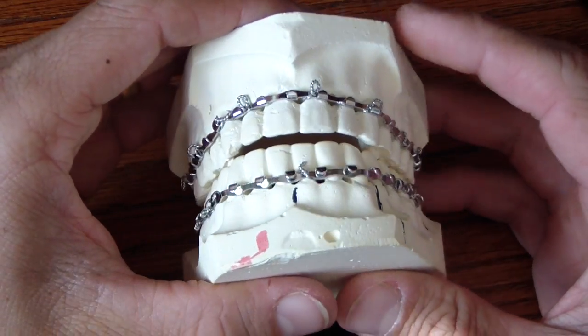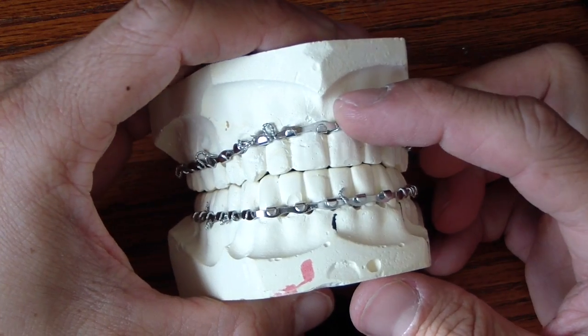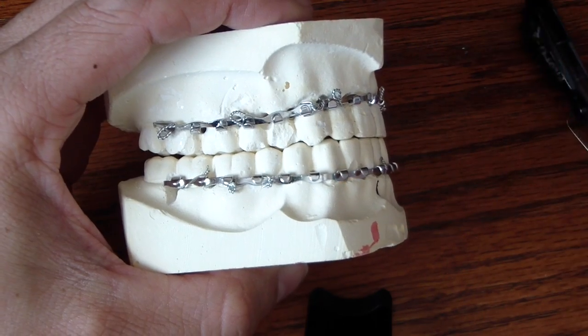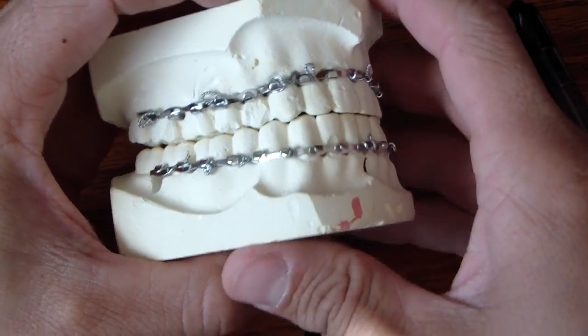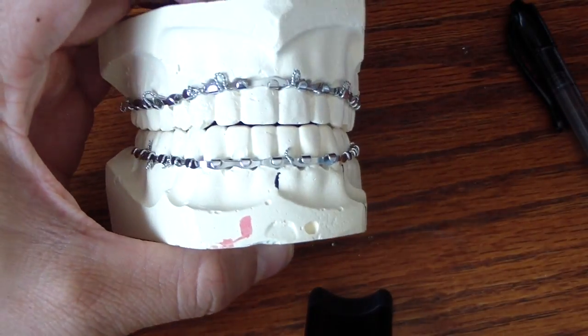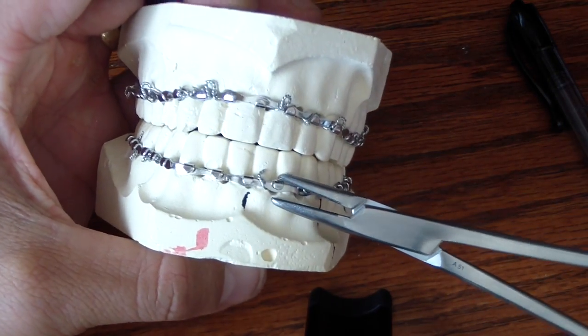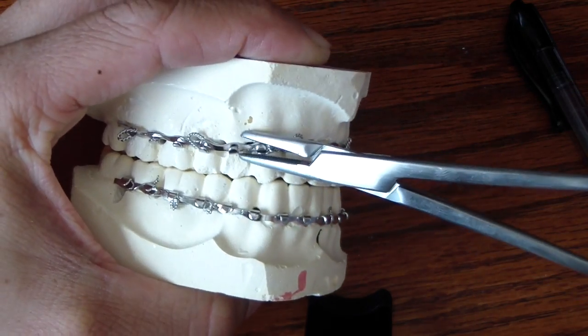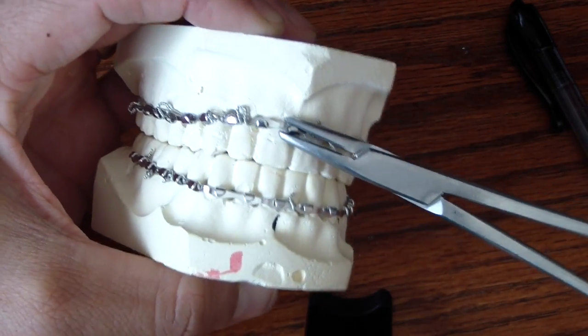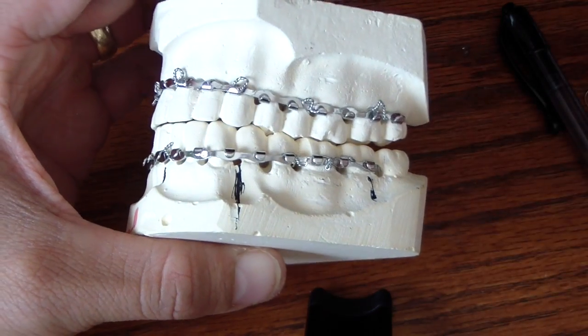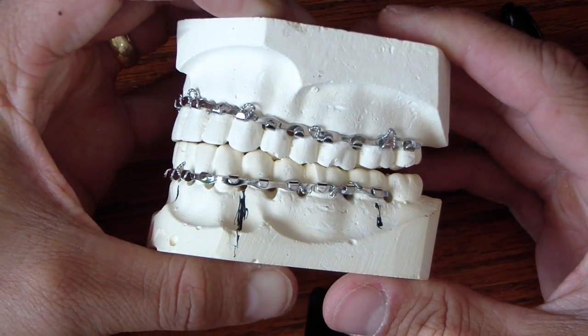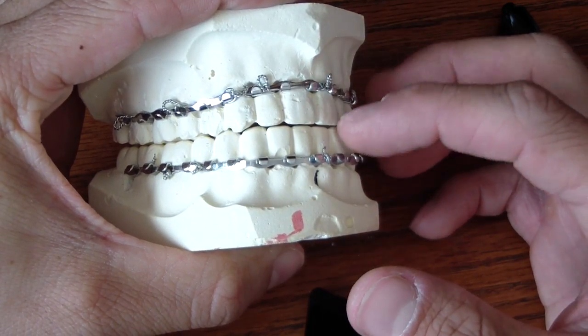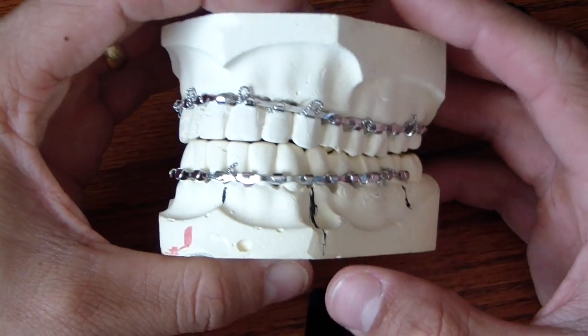We're using 26 gauge wire and one of the critical things is to make sure you're placing the lugs apically so when you go to use your fish loop to fixate the jaws and wire the jaws shut, it's not going to move. Make sure after you've placed your arch bar that it's not moving. You can do this under local anesthesia, commonly done under conscious sedation.